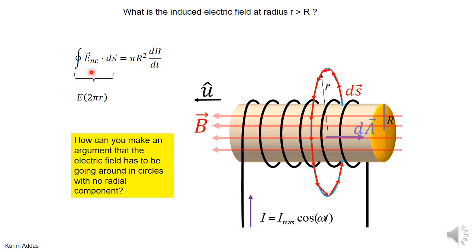From symmetry, the electric field should be the same value at all locations on the circle — there's no reason for it to vary. So E·ds becomes E times the circumference 2πr. If the right-hand side is positive, E is in the direction of ds; if negative, E is opposite the direction of ds. We can also simplify by dividing, which gives the electric field a 1/r dependence. As you go to further and further distances, the field becomes weaker as 1/r.